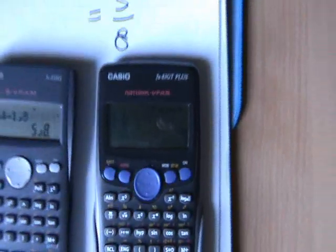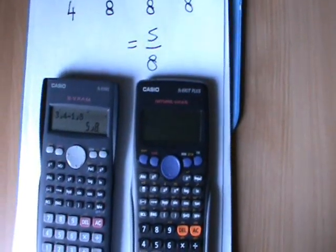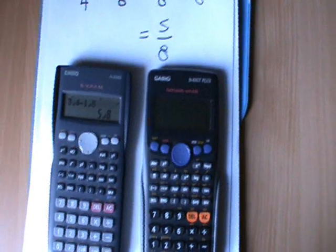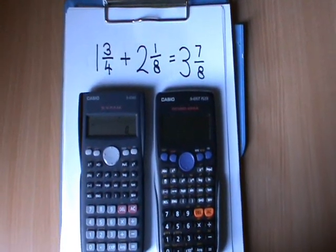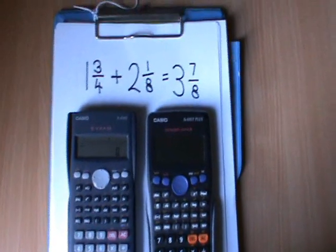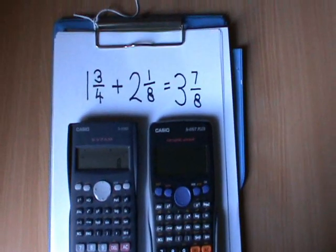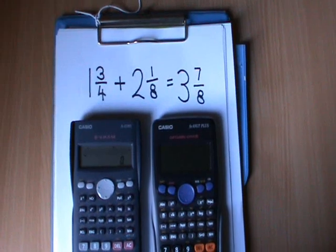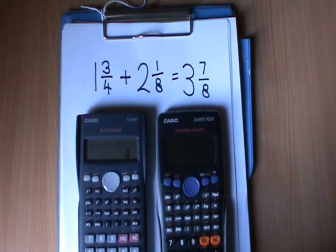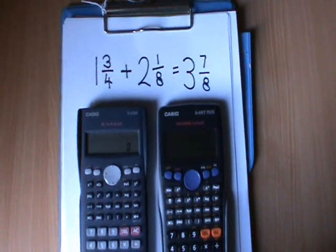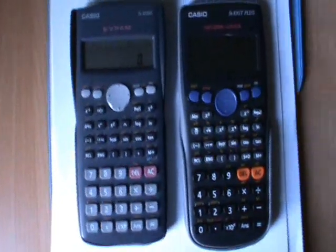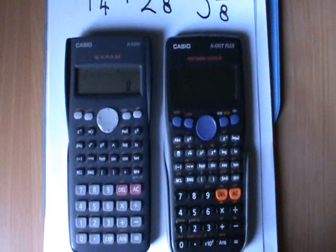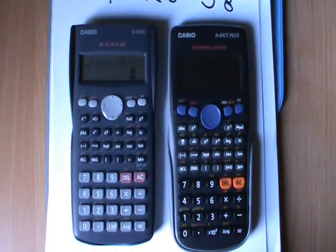So that's how you do simple fraction sums using a scientific calculator. Now we're going to try a more difficult sum with fractions on a scientific calculator. So 1 and 3 quarters plus 2 and 1 eighths makes 3 and 7 eighths. We'll do it on the older calculator first of all.